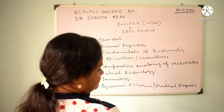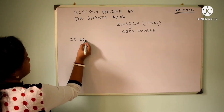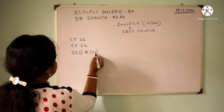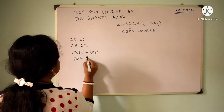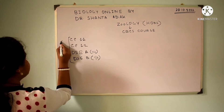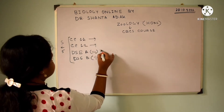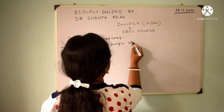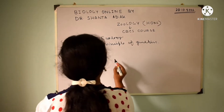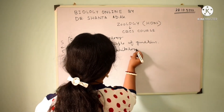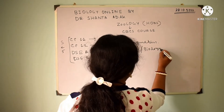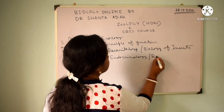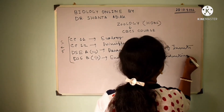So, the second year is being completed with CC11 and CC12, DSE A and DSE B in Semester 5. Ecology will be discussed here, along with Principles of Genetics. DSE options include Parasitology or Biology of Insects, and Endocrinology or Reproductive Biology.